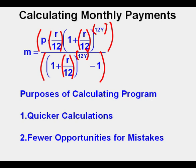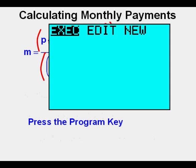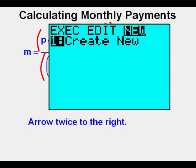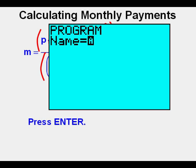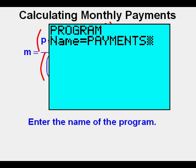You will need to follow along very closely to get the program steps correct — stop and move the slider back as necessary. First, press the program key. Arrow twice to the right until New is highlighted. We see Create New under the New menu. Press enter. You see the alpha cursor blinking. Enter the name of the program — you can use eight characters maximum. I entered the name Payments, so when I go to the Programs menu later, the right program will be easier to identify. Press enter.